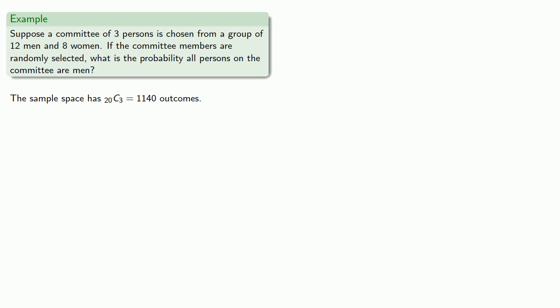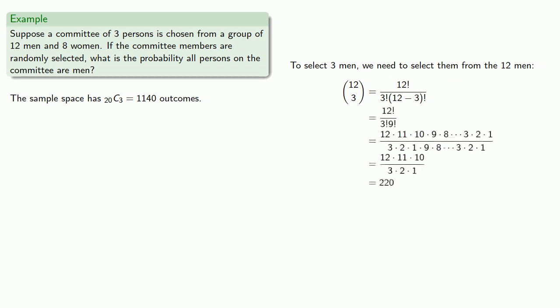Now, to select 3 men, we need to select them from the 12 men that we have available. And so here, we'll use our different notation for expressing the number of combinations, 12 choose 3, and our formula gives us 220.